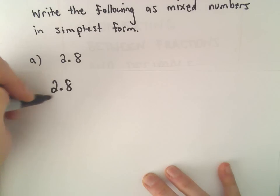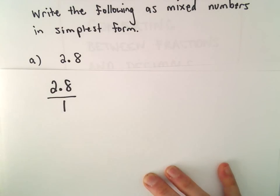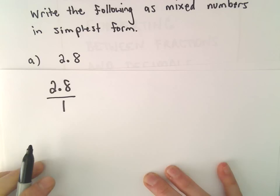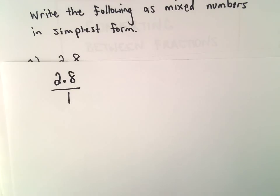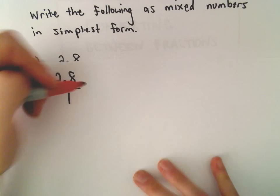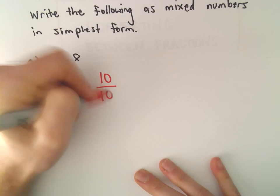So I'm going to write 2.8 over 1. Again, we like to not see decimals in our fractions. That's how we tend to write them. So to get rid of the decimal place in the numerator, we'll just have to multiply by 10 over 10.